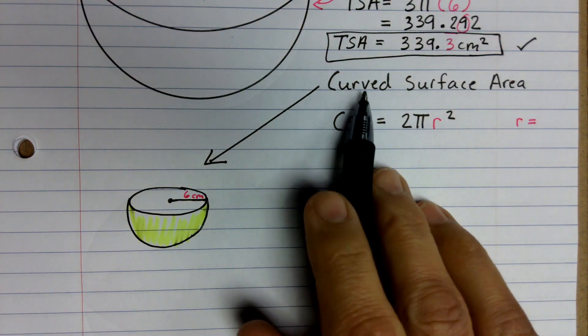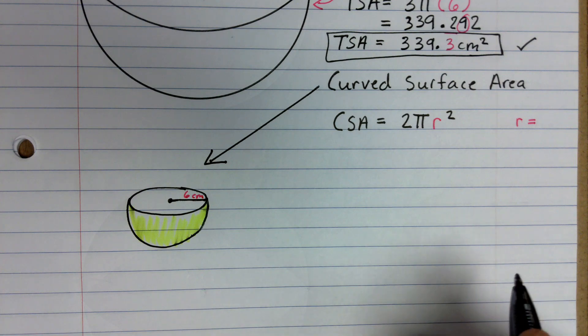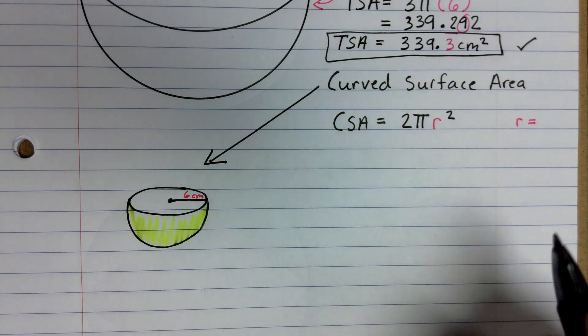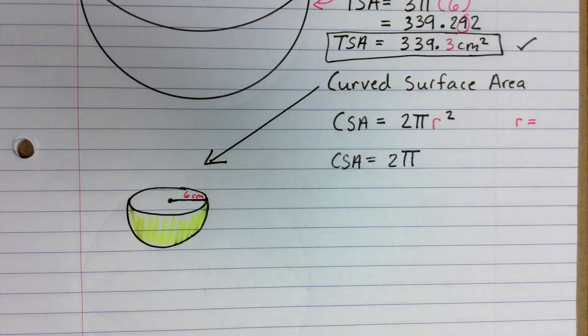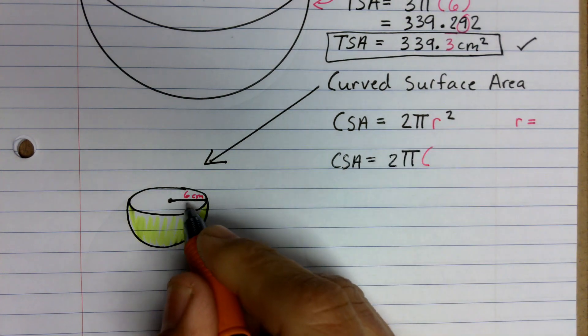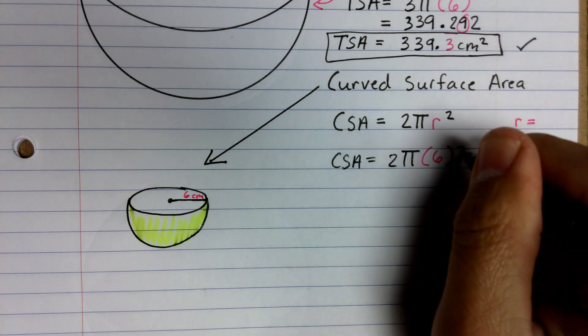And as I call it, CSA, which stands for curved surface area, 2πr². So the only difference between this and the other one is we would say CSA is equal to 2 times π times my radius of 6 squared.